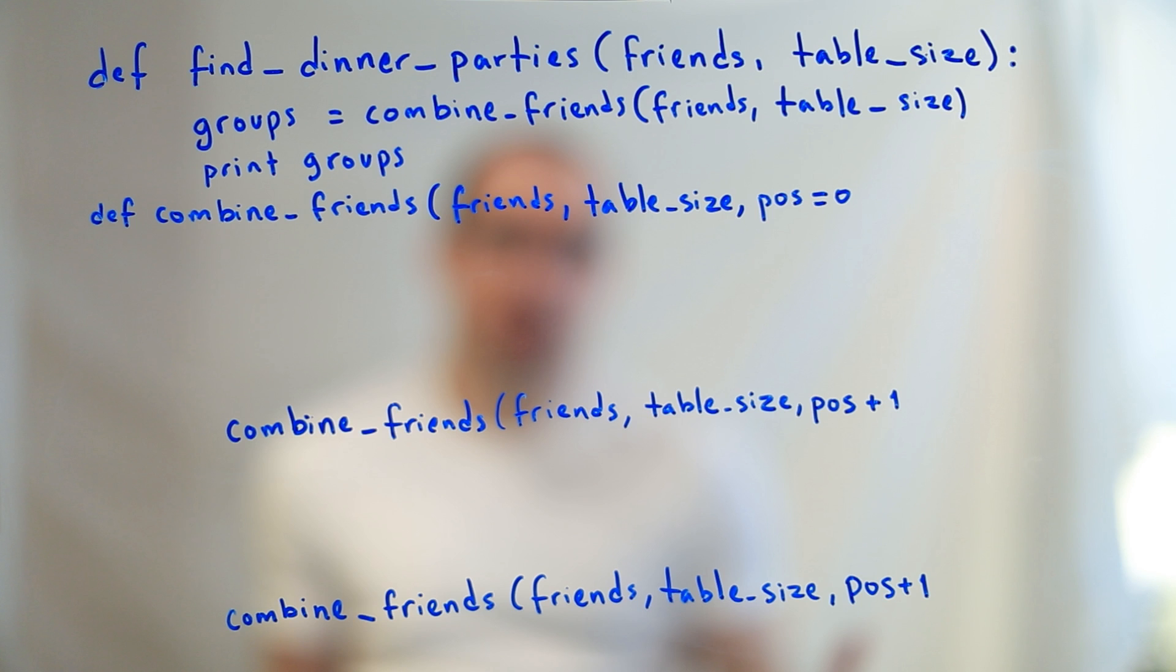So what this means is that every call of the combine friends function has the opportunity to do something with its current position in the friends list. And then it's going to recurse with the next position in the friends list after it's done whatever it's going to do. This is the basic pattern of recursion that we know that we need here. And just like we said in the chart, we're going to recurse in two directions. In one direction, we're going to skip the current value. In another direction, we're going to include the current value.